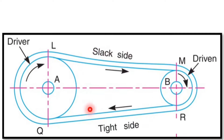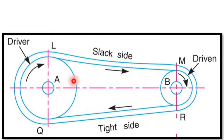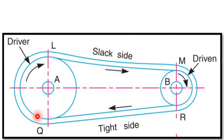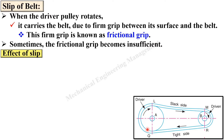Consider this figure. Here you can see this is the belt, this one is the driver, and this one is the follower or driven shaft. The driver is rotating in the clockwise direction, that is why it is called the tight side, and thus this is the slack side. When the driver pulley rotates, it carries the belt due to the firm grip between the pulley and belt. This firm grip is known as frictional grip.